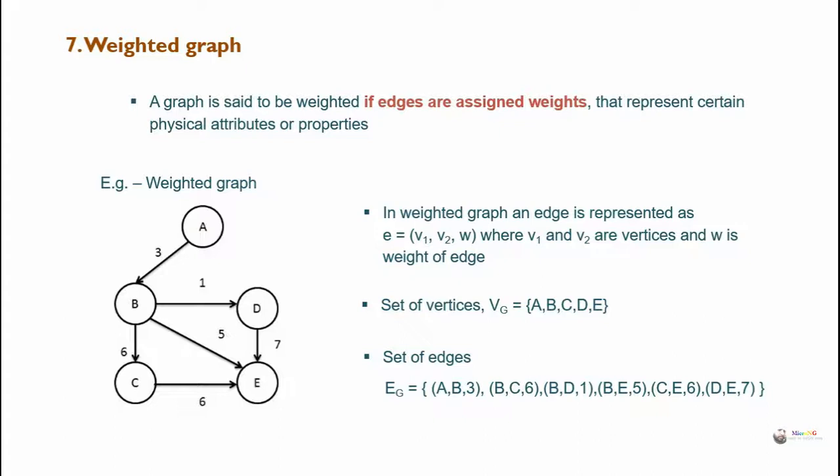This is also an example for a weakly connected graph because the out-degree of vertex e is 0, making it a sink, and the in-degree of vertex a is 0, making it a source.